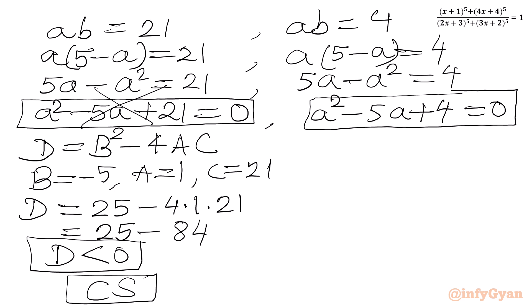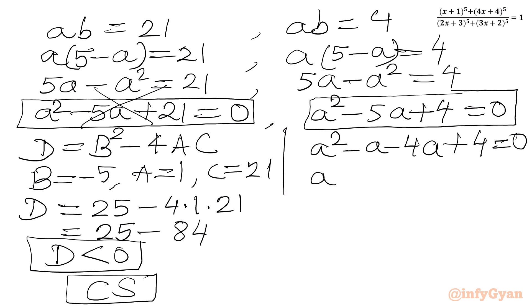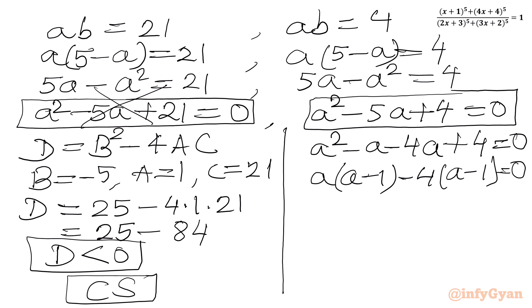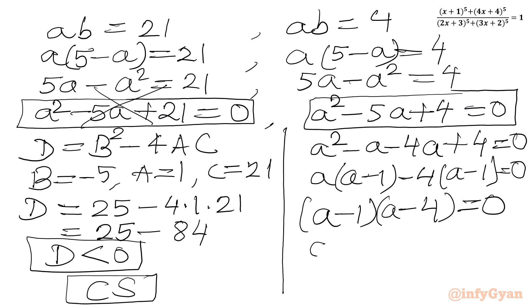Now I have to solve the second quadratic: a^2 minus 5a plus 4 equal to 0. I can write this as a^2 minus a minus 4a plus 4 equal to 0. From the first two terms, a is common, giving a(a minus 1). From the last two terms, negative 4 is common, giving negative 4(a minus 1) equal to 0. So (a minus 1)(a minus 4) equal to 0, meaning a equal to 1 or a equal to 4.